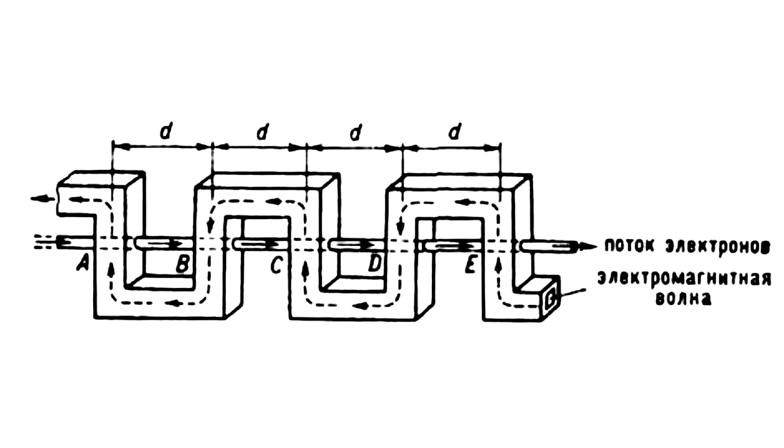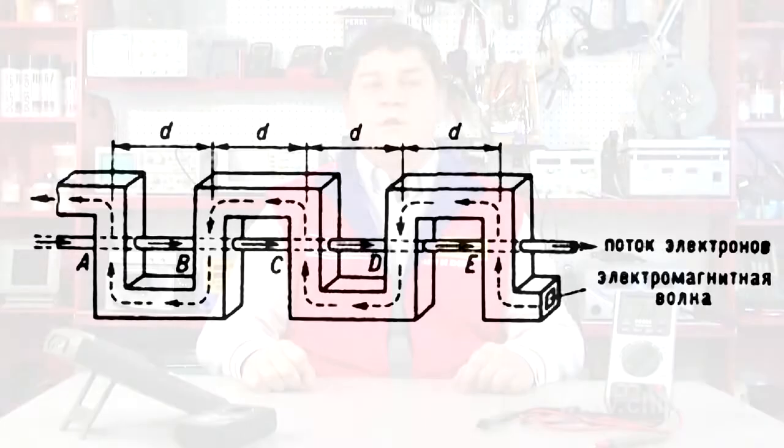The fast electrons catch up with the slow ones. This phenomenon is called grouping or phasing of the particles. The induced high-frequency current of electrons irradiates the high-frequency field, which flowing into the initial wave leads to its strengthening. At the exit of the tube near the electron gun, a field of greater amplitude than the original one is created. For a grouped beam to emit and not absorb electromagnetic waves, the initial velocity of the electrons should be slightly higher than the phase velocity.